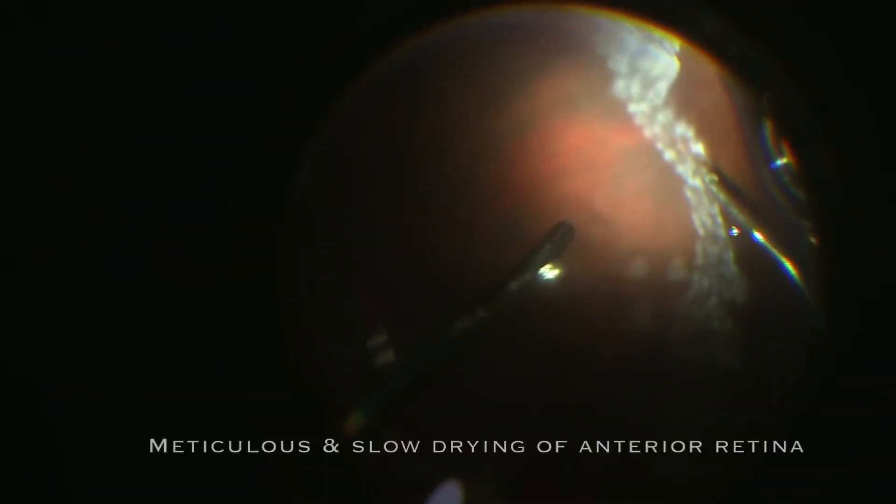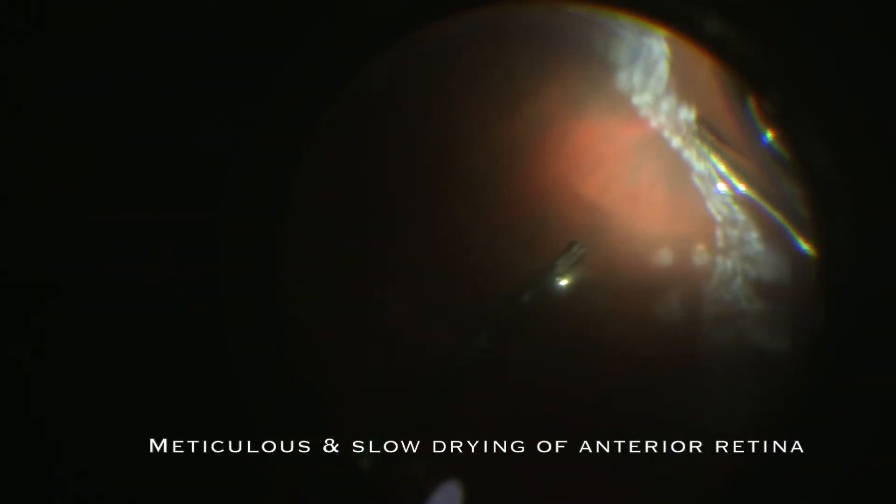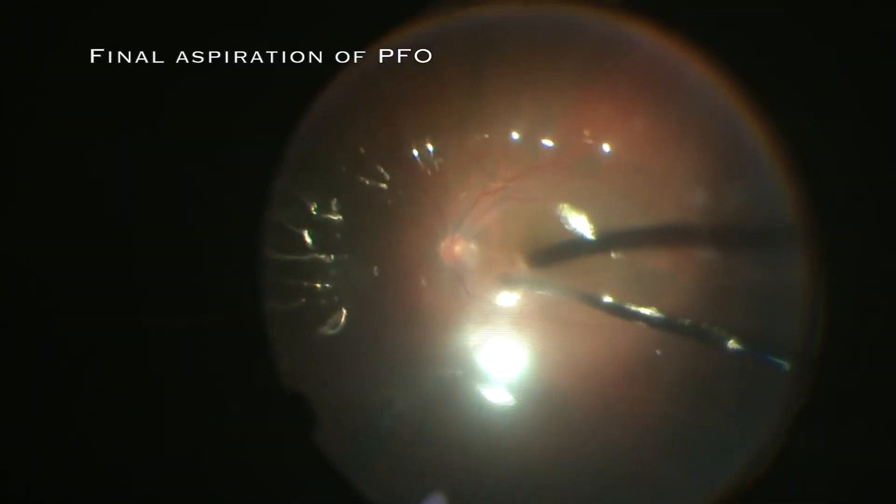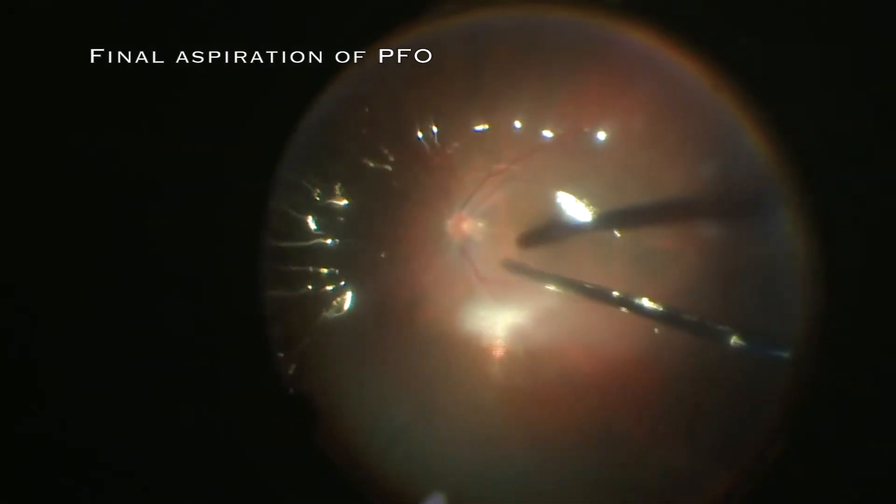Fluid-air exchange is performed in the last. It has to be slow and thorough drying of the anterior retina has to be done till the PFCL bubble recedes beyond the posterior edge of the GRT. Once that is achieved, the residual PFCL can be aspirated from the posterior pole. Performing this step in haste can lead to slippage and seepage of subretinal fluid.